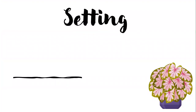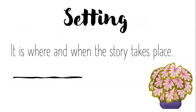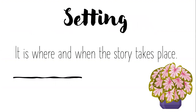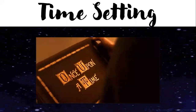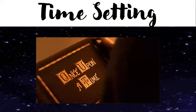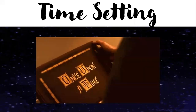Let's first have the setting. A setting is where and when the story takes place, and we have types of setting. We have first the time setting. The time setting tells us when the story takes place. So in the story Cinderella, it happened once upon a time.